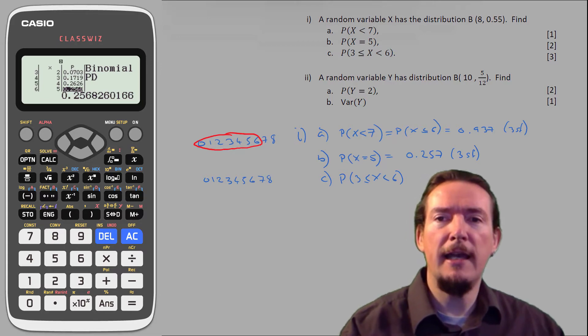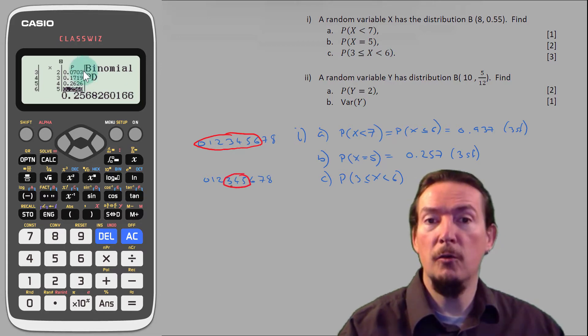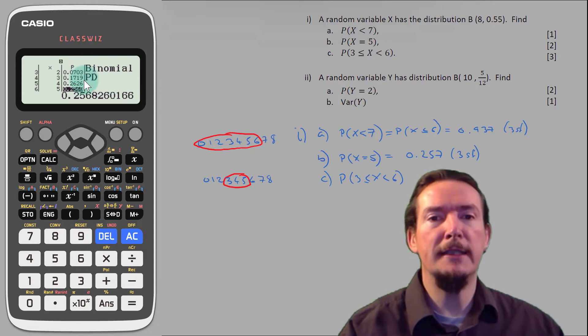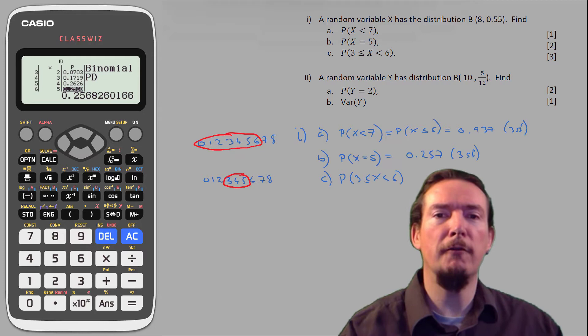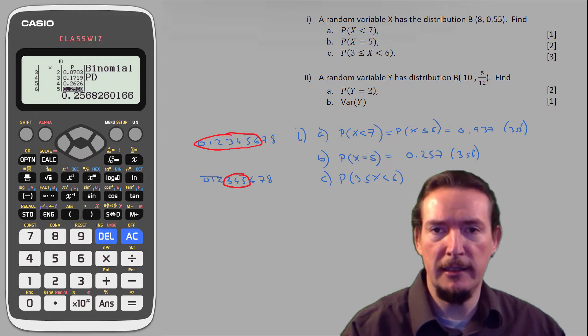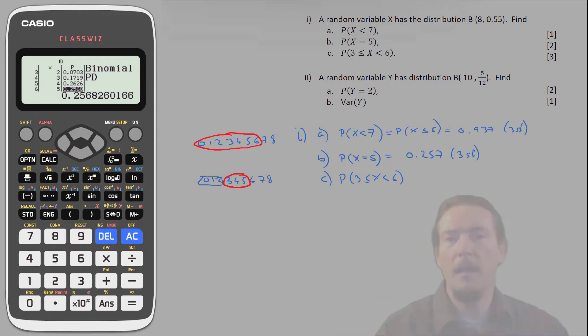So we can either add these three single probabilities together, or we can use the cumulative probabilities and subtract the probability that x is less than or equal to 2 from the probability that x is less than or equal to 5. Either approach is fine, but I normally go for the one that requires the least number of values to work with, so I'm going to switch back to cumulative probabilities.